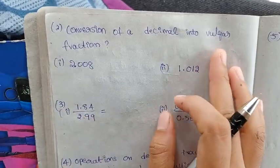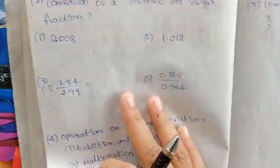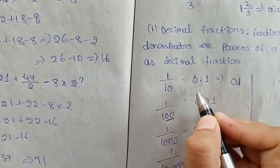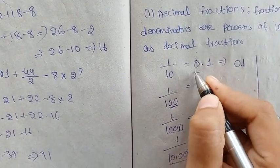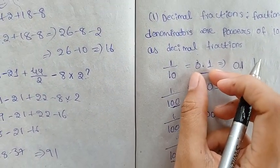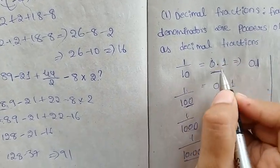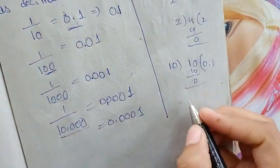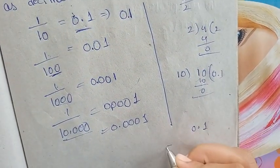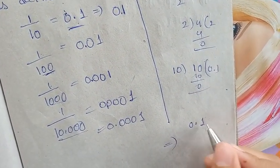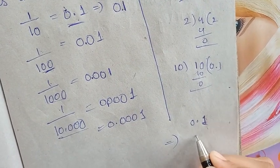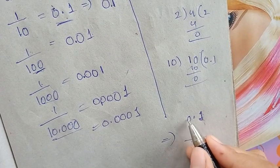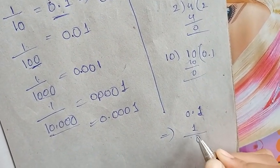The conversion of decimal into vulgar fractions — that means we have to do 1 by 10. 1 by 10 is the name of the decimal value. We have to convert this decimal value into the fraction. The same value is 1, divided by this decimal value. This value is 1, down is 0, so we can get 1.